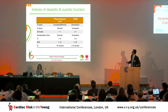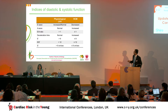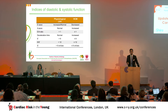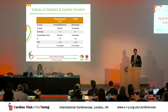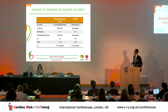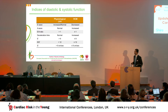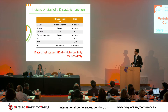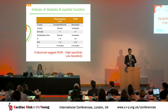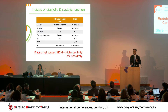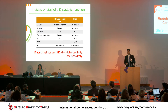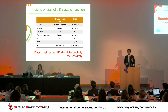I'll briefly show the table of diastolic and systolic indices — these are the common ones anyone could use, with other options available on a more research basis. The key message regarding these indices is that if abnormal they suggest pathology, giving high specificity, but if normal they do not exclude pathology because they have very low sensitivity.